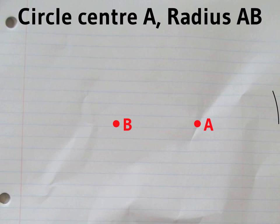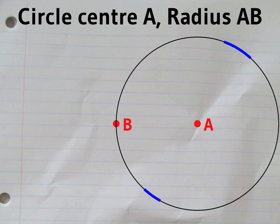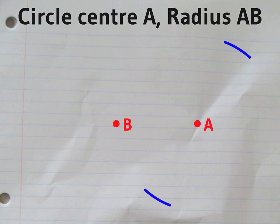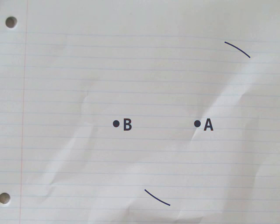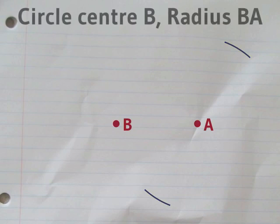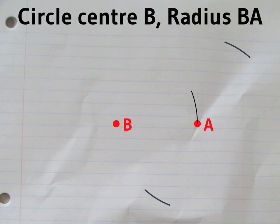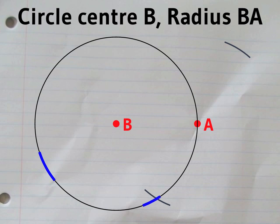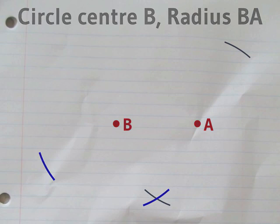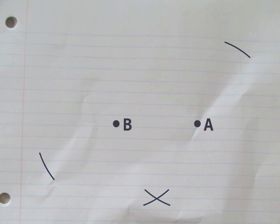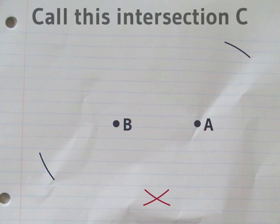First you draw a circle centered on A with radius AB. Then another circle with the same radius centered on B. I'll call C this point where these two circles meet.